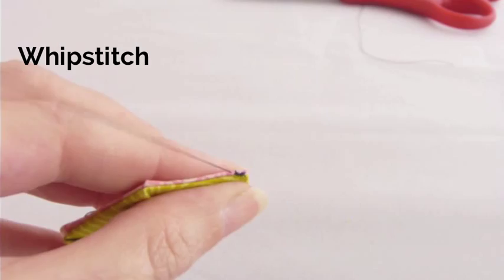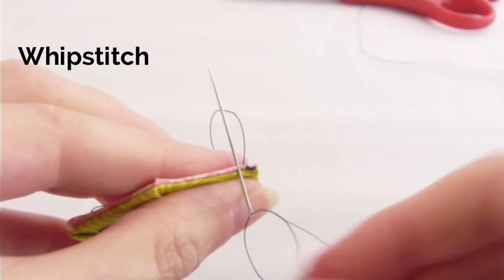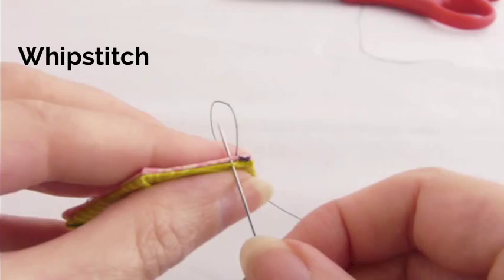Always feel around for the place where you don't feel any resistance from the templates. That's how you know you're stitching close enough to the edge. Nobody's going to die if you stitch through the templates. It just makes them a little harder to pull out later.